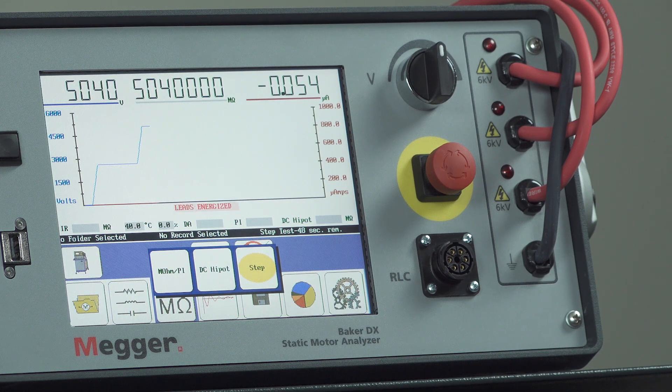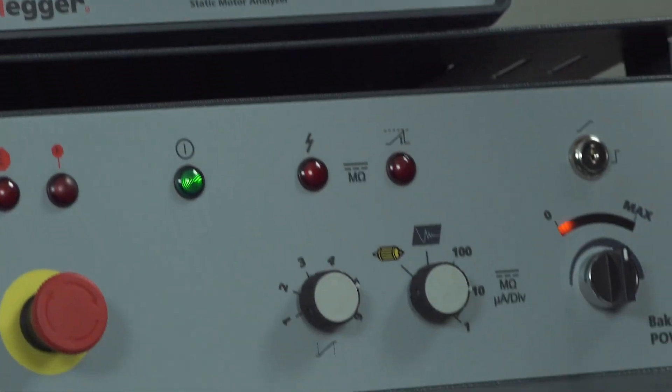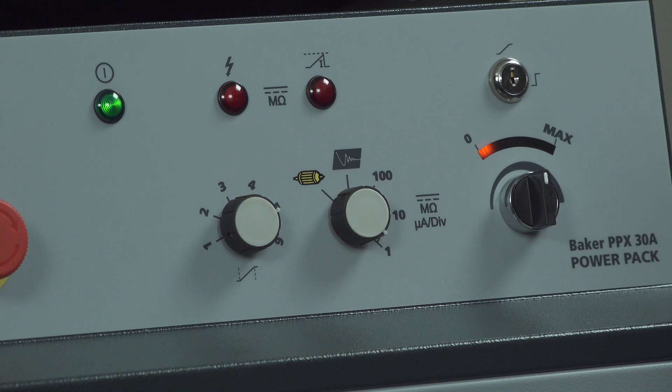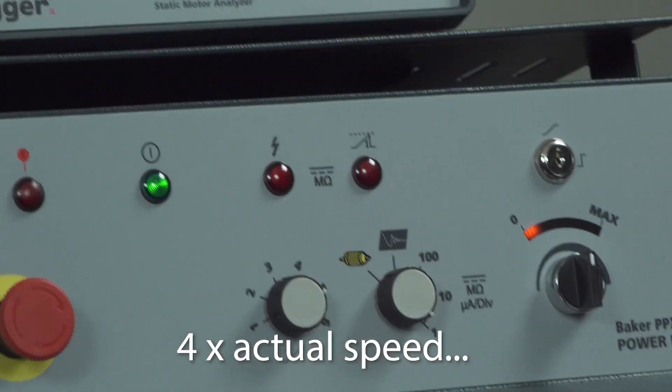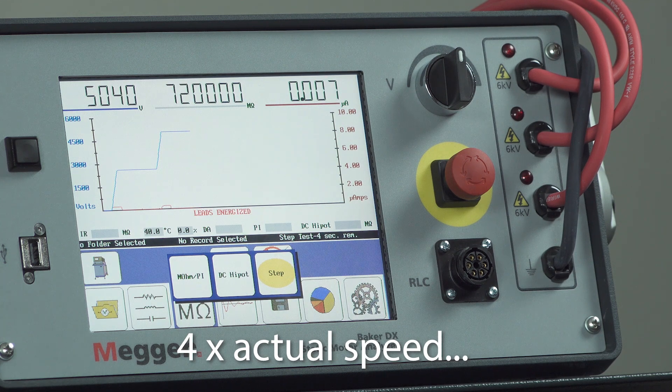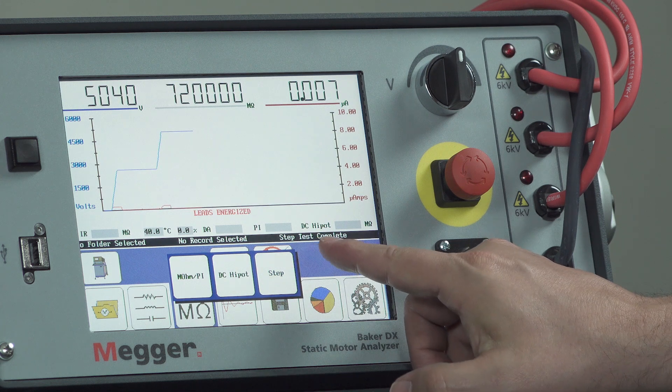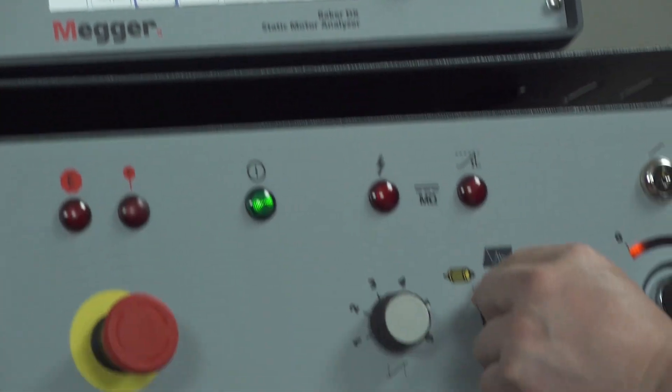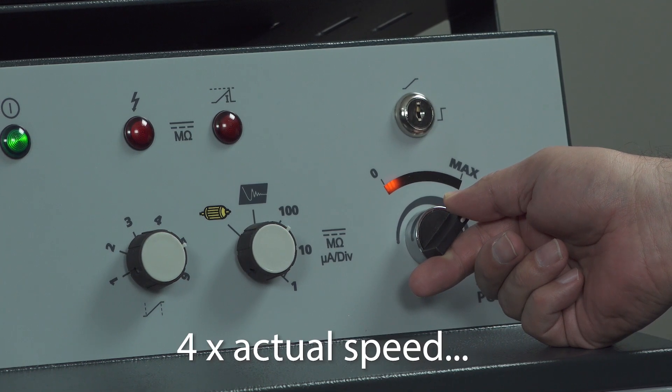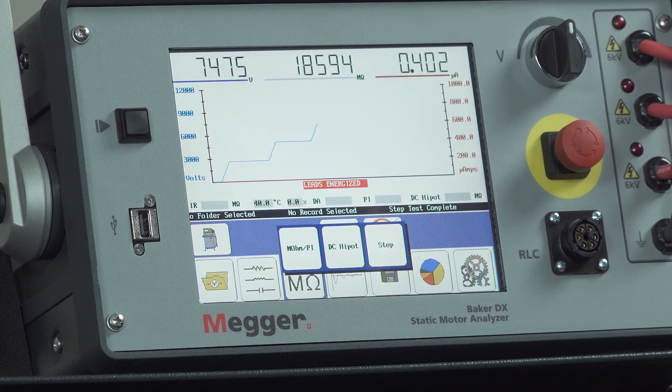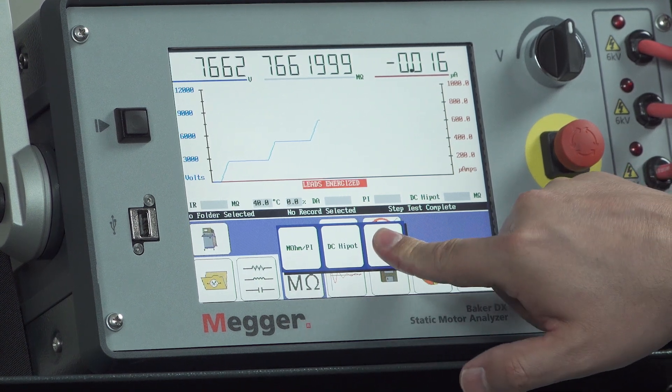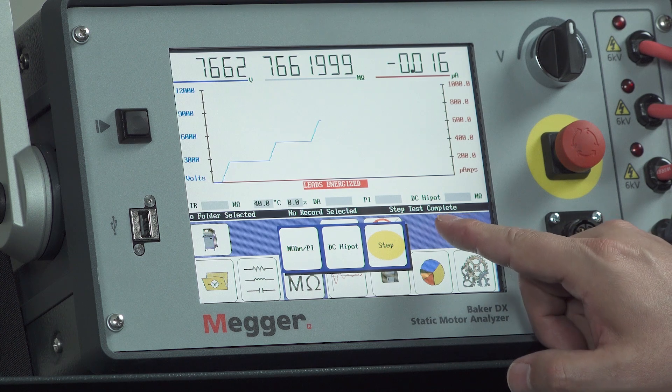Now to monitor the current, we're going to take that microamp per division setting and lower it to the lower range, as long as our current is low, to ensure that we're in the most accurate range for measuring the current. Our second step is complete. We'll take that function control switch back to 100 and then ramp the voltage to our next step, which will be 7,500. Now we've achieved 7,500 volts. Hit the step voltage or step button again. There we go, and we get a new step timer.